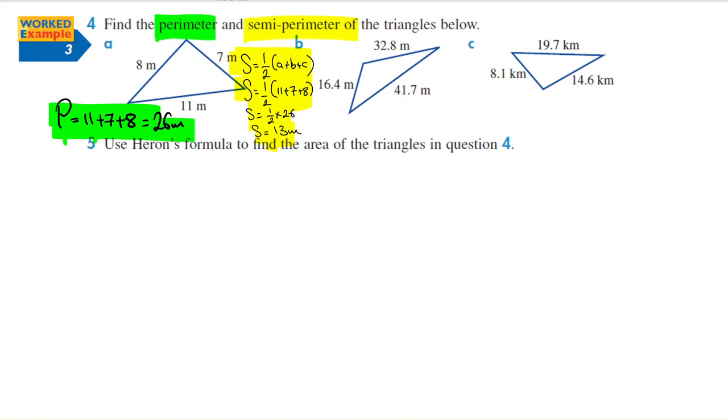Okay, so we calculated perimeter—perimeter is when we added all of those sides together. Semi-perimeter was half of that perimeter. We calculated and we call it s. Now for Heron's formula we're going to need that s.